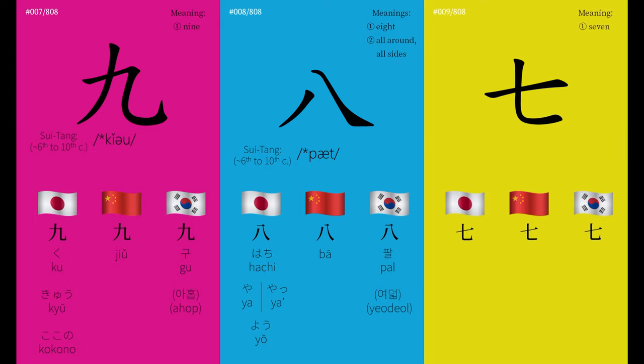For pronunciation, the Middle Chinese ancestor of most modern pronunciations was jet. This becomes chi in Chinese, shich in Japanese, and chil in Korean. The Japanese also have their own readings of nana and nano, and the Koreans have ishiko.